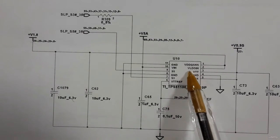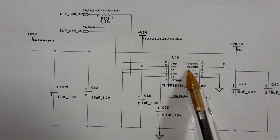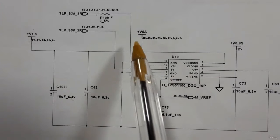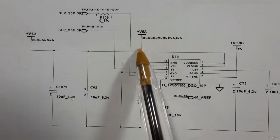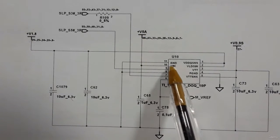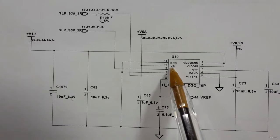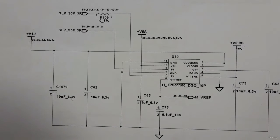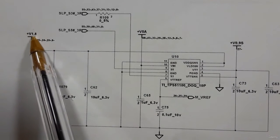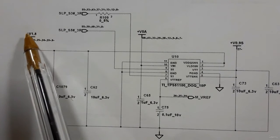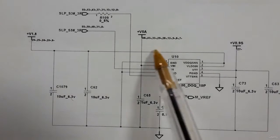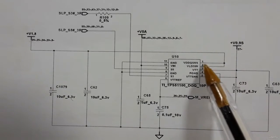The working power, VIN, for this IC is not 19V — this is just a small IC. It uses 5V as VIN, the working power. Then 1.8V is the input to the IC.